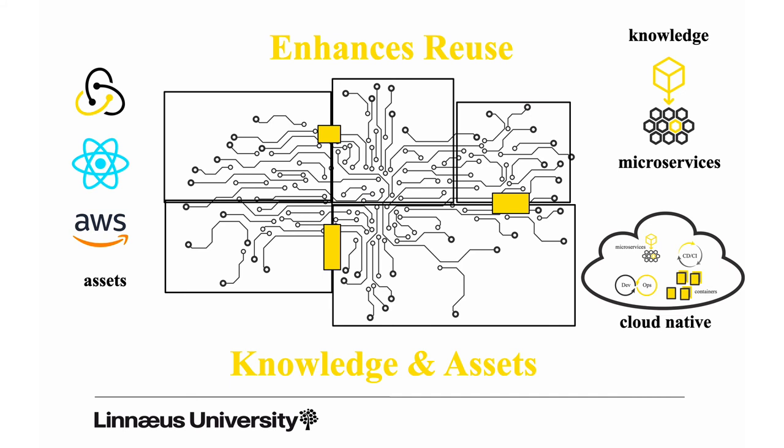Both microservices and cloud-native approaches will impact how we should organize the architecture. We also know to some extent the consequences of these decisions. If we decide to go for microservices, for instance, we know that we should organize our development team in a certain way and the architecture should match this organization. If we go for cloud-native, we have continuous integration and continuous deployment, meaning we should come up with an architecture that suits that style of automated processes.